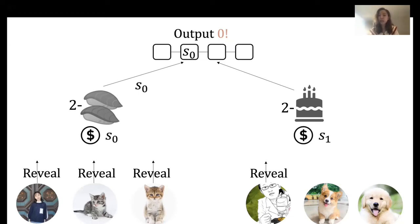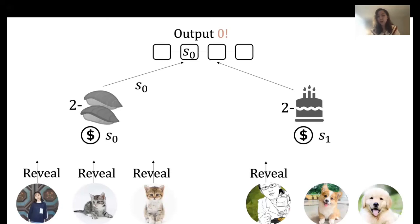This is because by the time the cake people decide whether to reveal S1, they already see the value of S0 on the blockchain. So even a coalition of only two cake people could bias the output by deciding whether to reveal S1 after seeing S0. This means if we output S0 when S1 fails to be revealed, we would only tolerate a coalition of size one. So instead, we output zero as a heavier punishment for the cake people if they refuse to reveal S1.